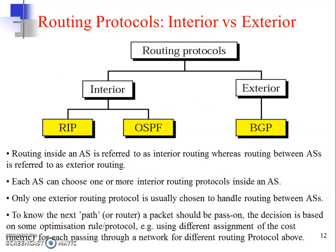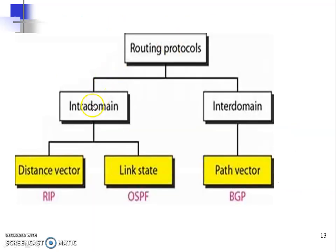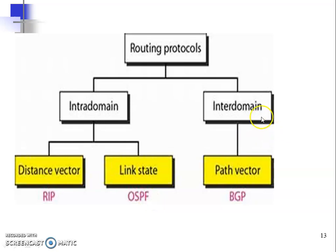Under intra-domain routing, there are two methods: distance-vector routing and link-state routing. Under distance-vector routing, the protocol is RIP — Routing Information Protocol. Under link-state routing, the protocol is OSPF — Open Shortest Path First. Under external or inter-domain routing protocols, the method is path-vector, used by BGP — Border Gateway Protocol.